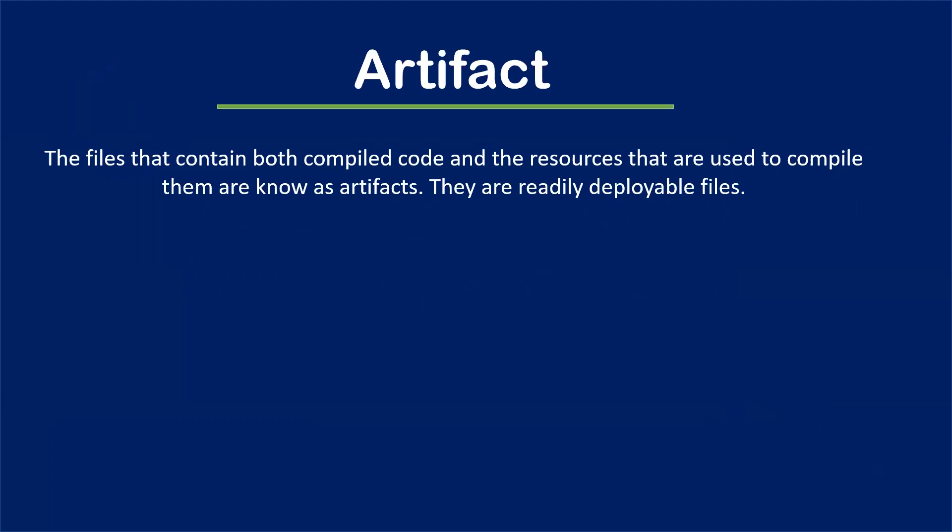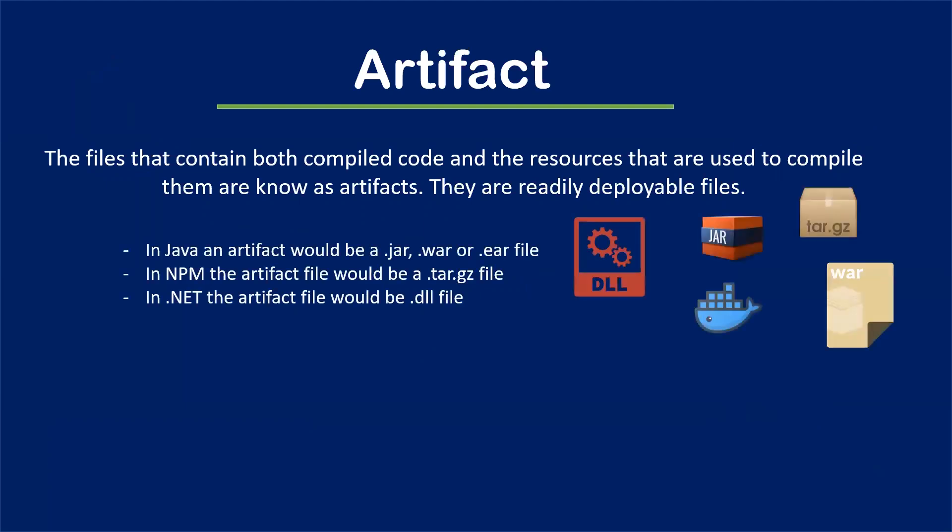An artifact is a file that contains both compiled code and the resources used to compile them. In other terms, we say an artifact is a readily deployable file. In case of Java, we say a .jar or .war file is an artifact. In npm, we say a tar.gz file is an artifact. In .NET, we say .dll files are an artifact.